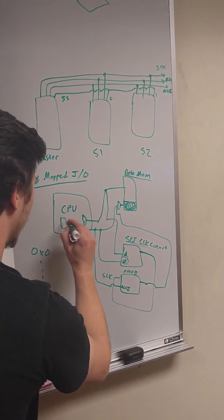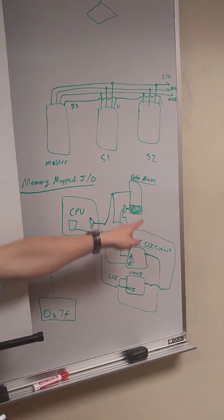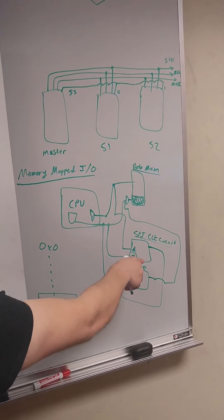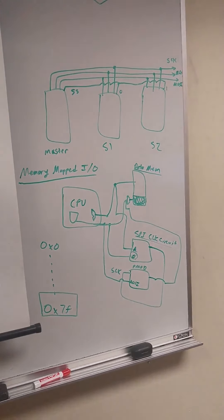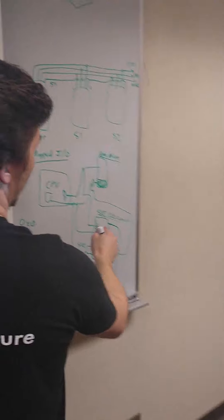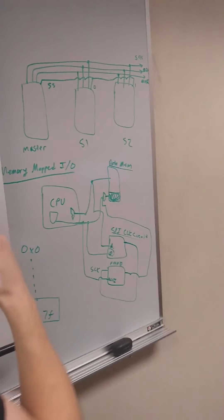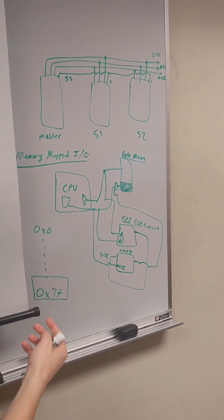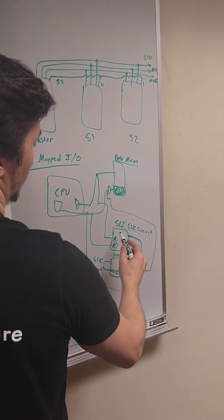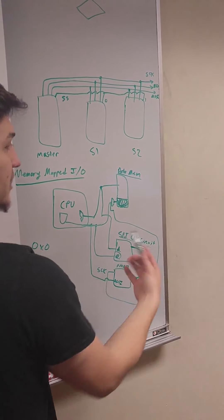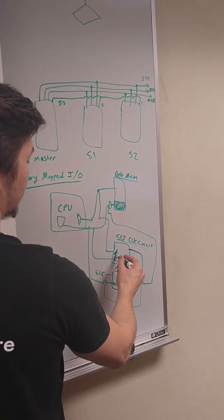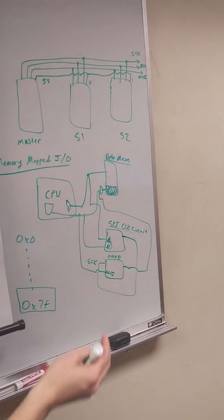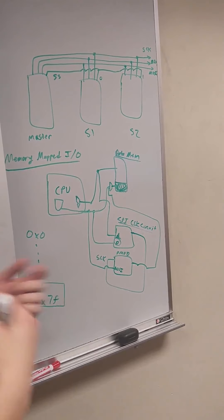That data is going to come from your RS2 line from the register file. It comes into your data memory path and goes to your PMOD and other peripheral circuits. So for an SPI clock circuit, you'd have it take an address input and interpret a certain address range as: set clock frequency, start clock, or stop clock.